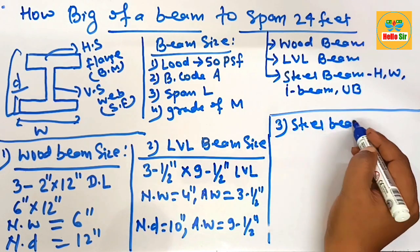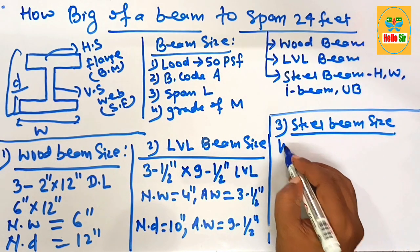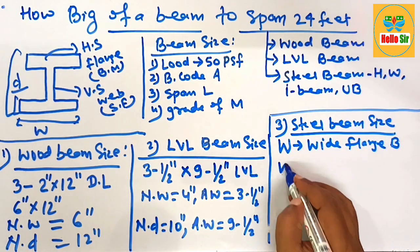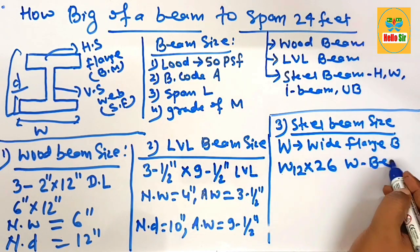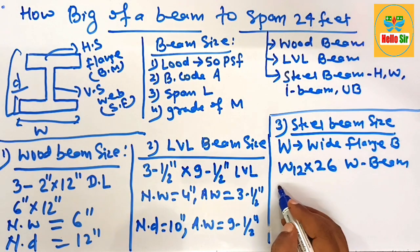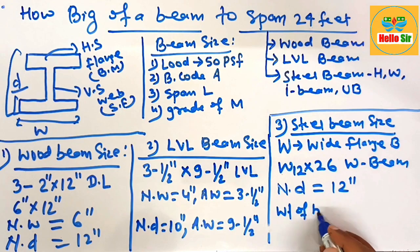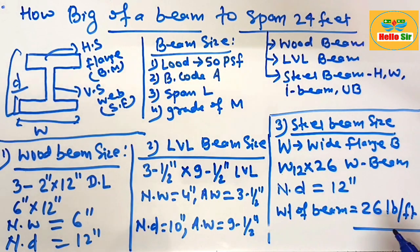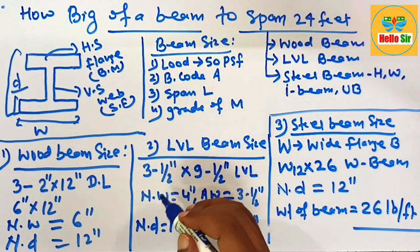For the steel beam size required to span 24 feet, you can use a W12x26 American wide flange beam. Here, W denotes wide flange beam, the number 12 is the nominal depth of the beam at about 12 inches, and the number 26 is the weight of the beam at 26 pounds per foot. These are the three different beam types required to span 24 feet.